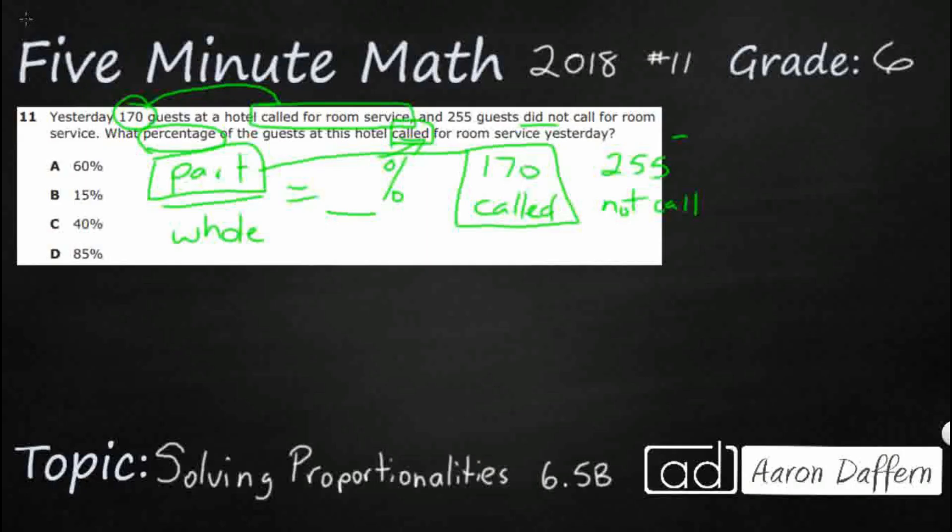but we don't know the whole. This 255, that's not the whole. That's just the amount of guests that did not call. So we have a simple fraction here, but we don't know the denominator yet. In order to get the whole, we're going to have to do one simple problem, but it is an extra step.